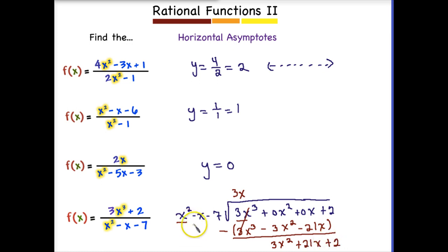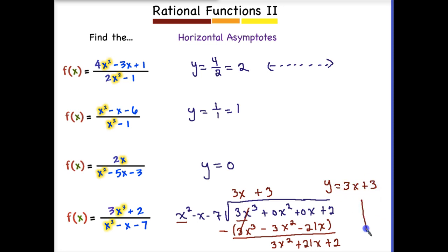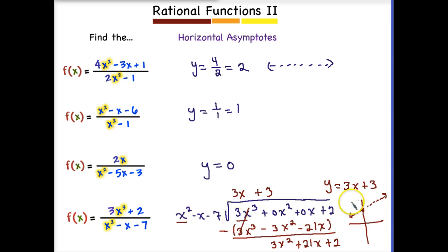How many times does X squared go into 3X squared? That would be positive 3 times. Now we have a linear function, so this is going to be our oblique asymptote: Y equals 3X plus 3. On the graph, we go up to 3, plot that point, and the slope is up 3 over 1. We could continue to get the remainder, but it will be too small to make any difference.